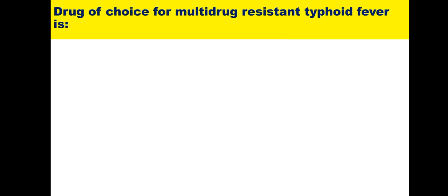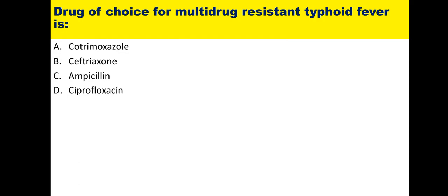Fourteenth: drug of choice for multi-drug resistant typhoid fever. Options are cotrimoxazole, ceftriaxone, ampicillin, and ciprofloxacin. Chronologically, chloramphenicol was developed first, then resistance emerged, followed by cotrimoxazole, ampicillin, and ciprofloxacin — all developing resistance in sequence. Nowadays many cases show resistance to ciprofloxacin, known as multi-drug resistant typhoid fever. For that, we must use a third generation cephalosporin — ceftriaxone. The answer is ceftriaxone.